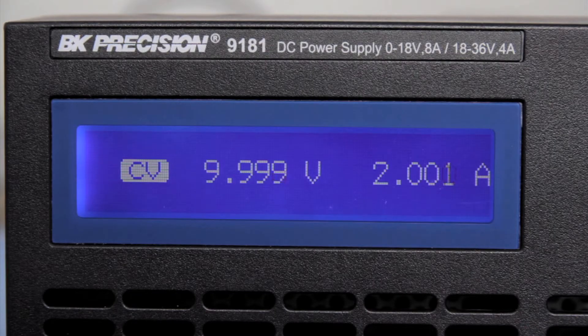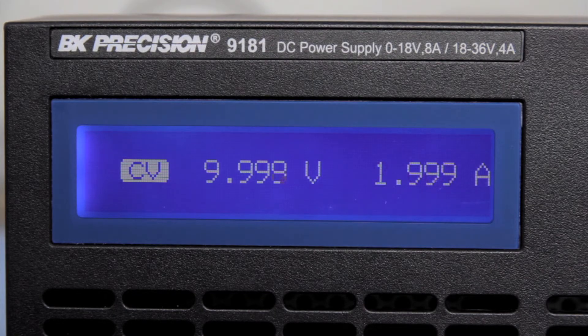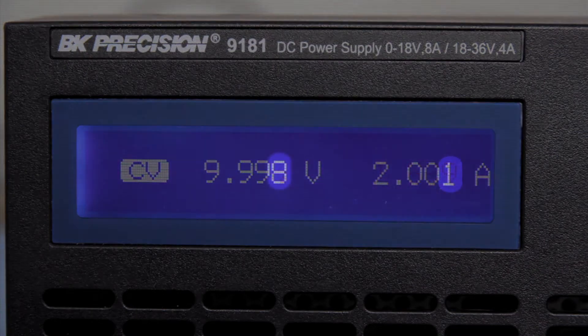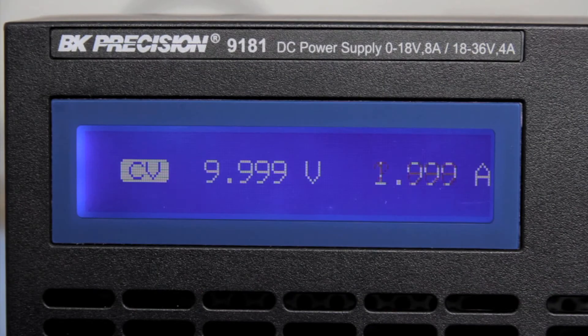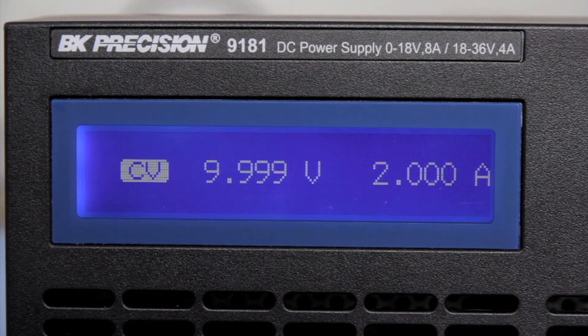Readback or meter resolution indicates the smallest change that can be shown in the measured output voltage and current. Similar to the accuracy specification, the readback and programming resolution can vary among different power supplies.